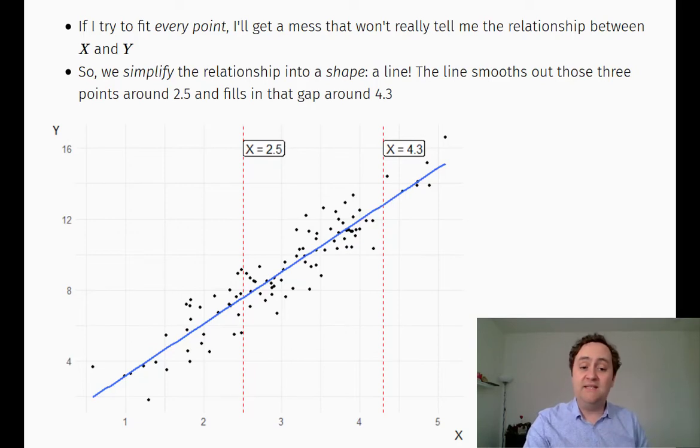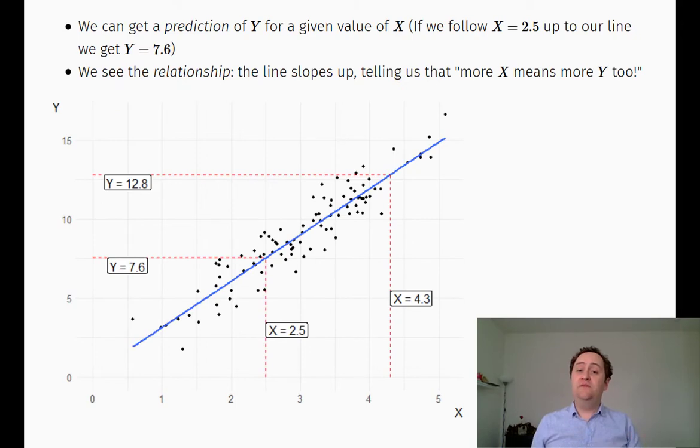So when I have this line in place, it does a couple of things for me. One, if I plug in a value of X, it will spit out a single value of Y. Because instead of looking at all the different data points that there are around that value of X, I can follow the value of X up until I hit the line. And then that will be the value of Y that I have. So that's the first thing the line does for me. It simplifies the prediction because I can put in the X and just follow it up until I hit my line, my shape. And that's going to tell me exactly what value of Y I'm going to predict. It also tells me about the relationship between X and Y.